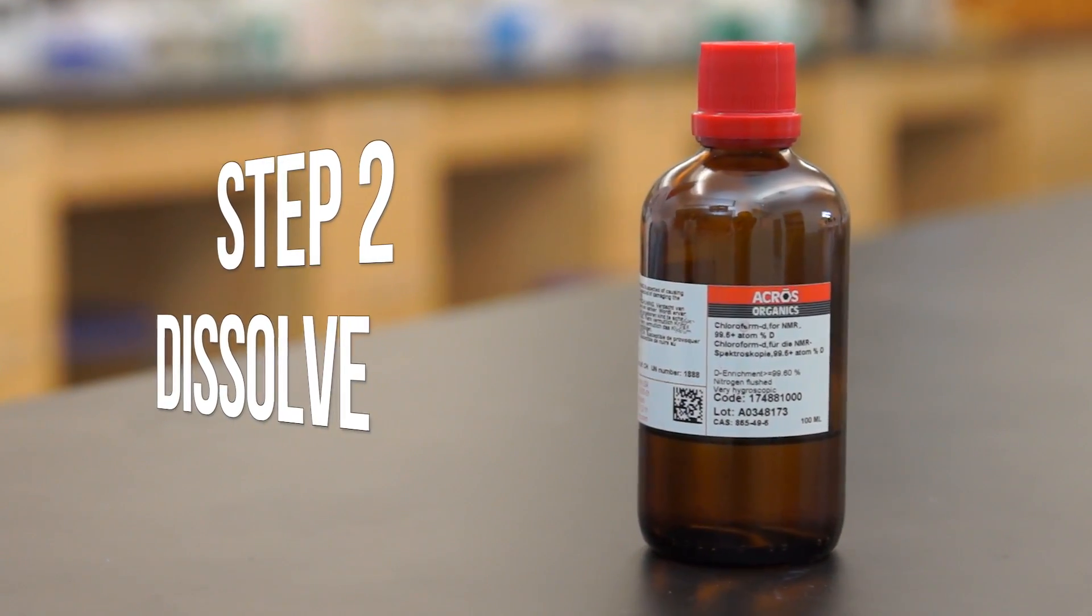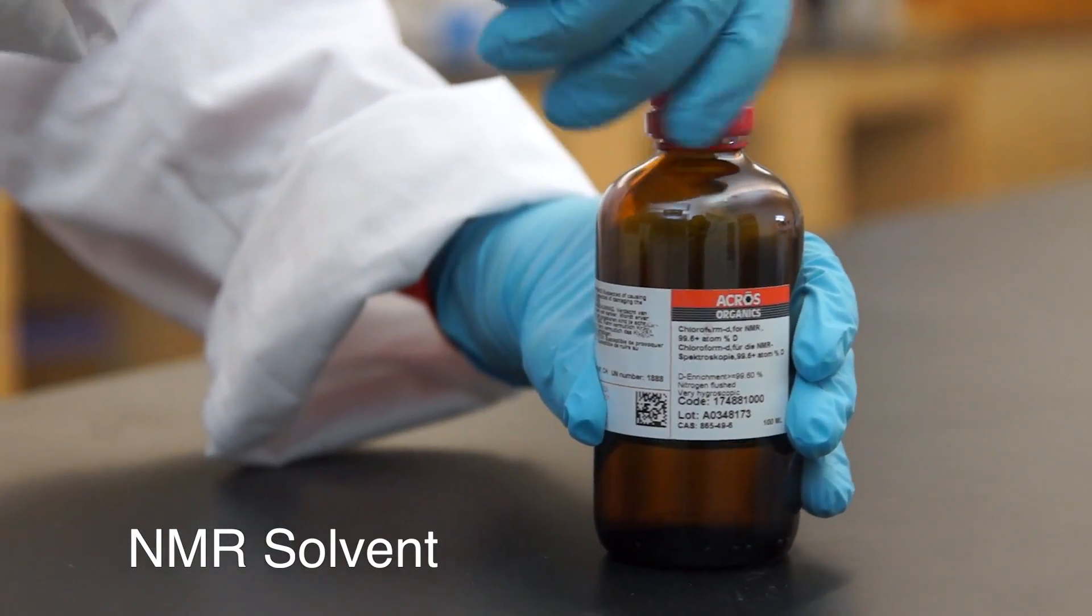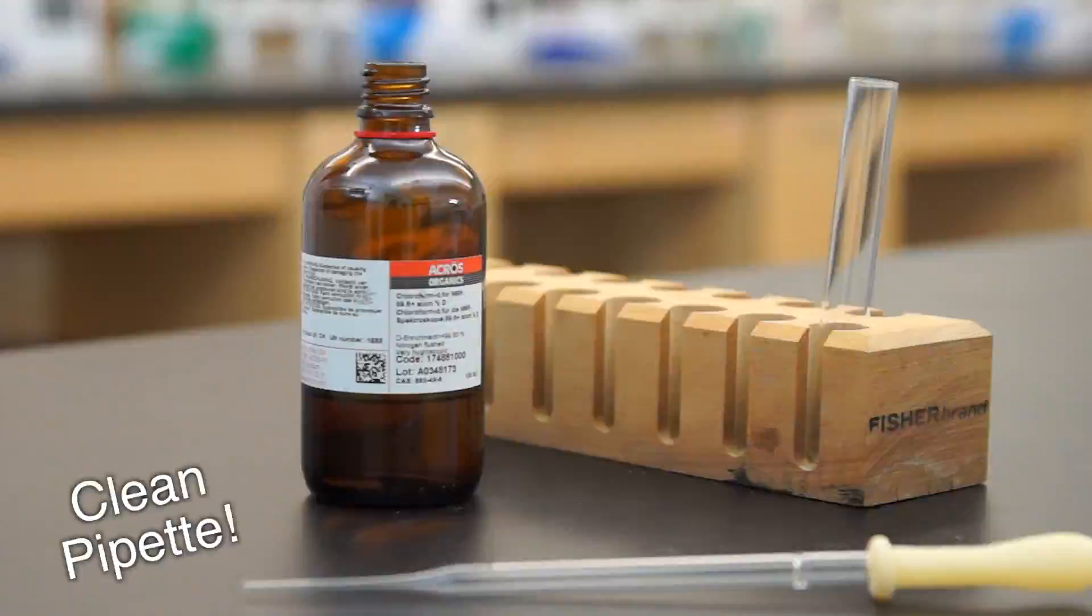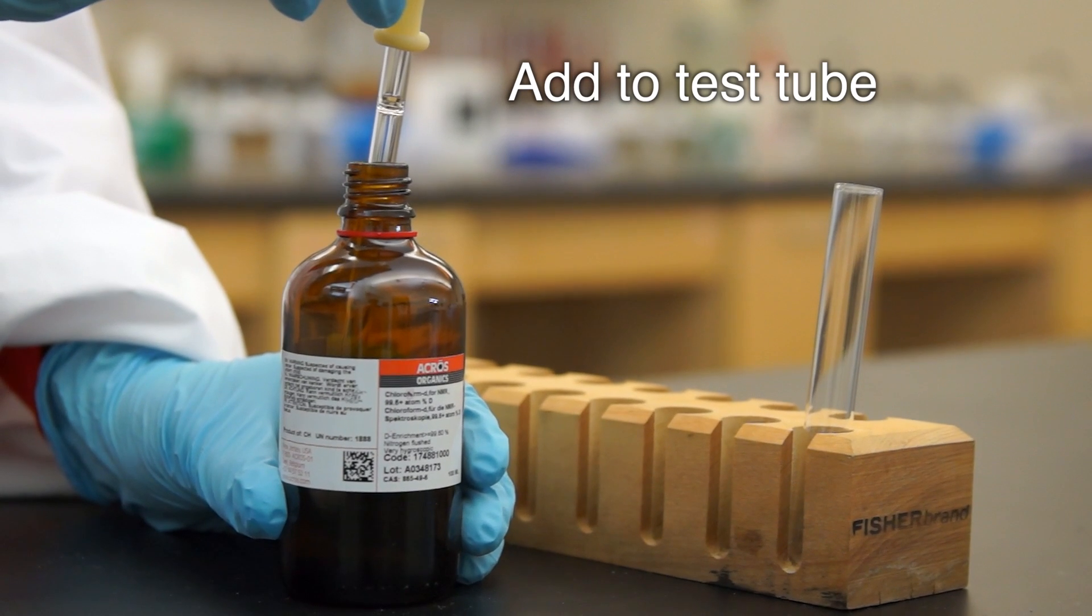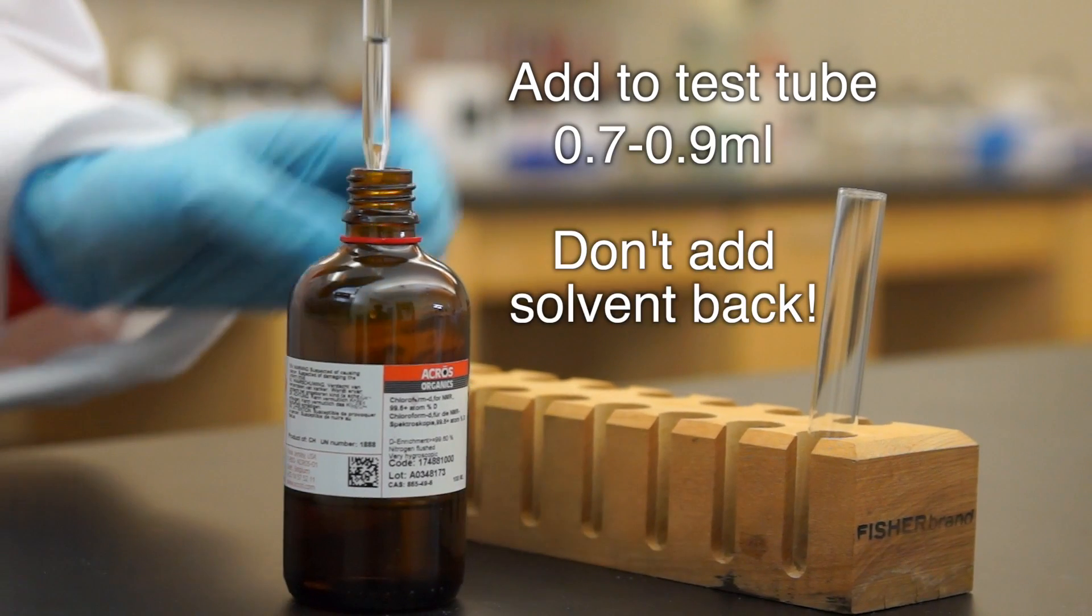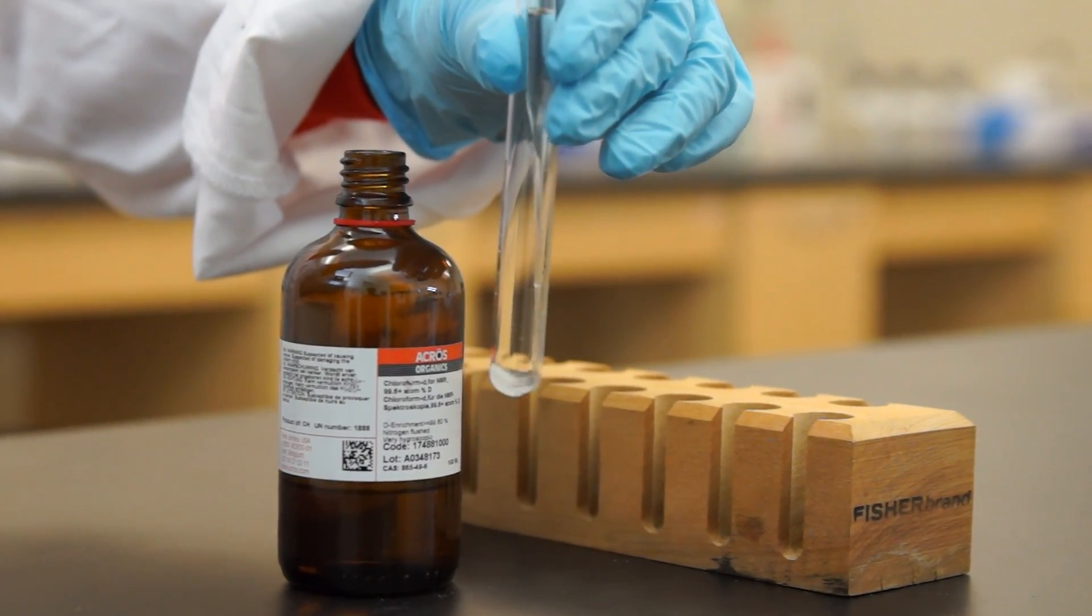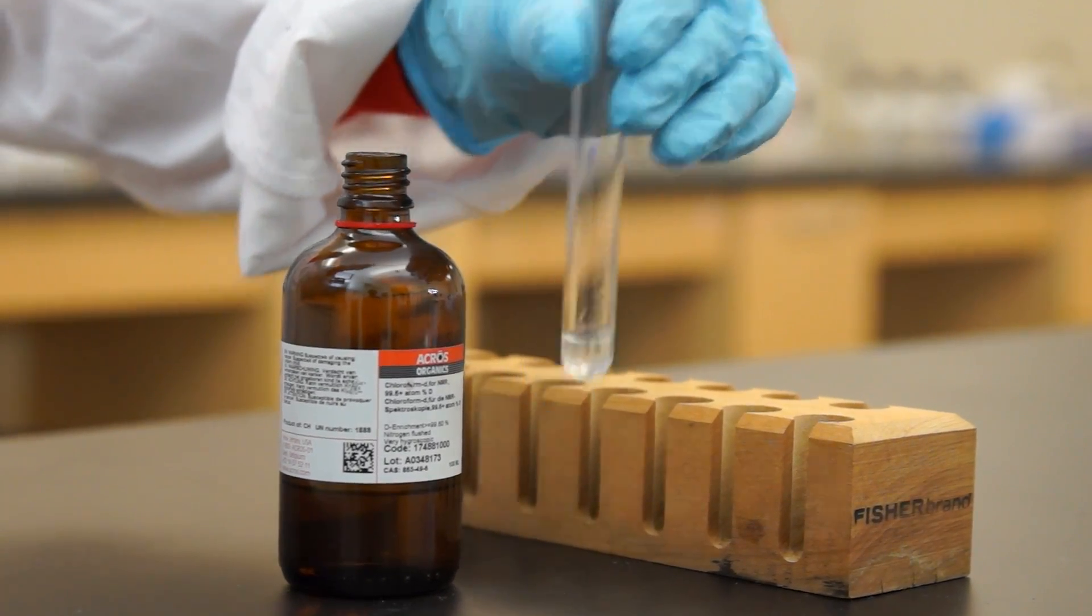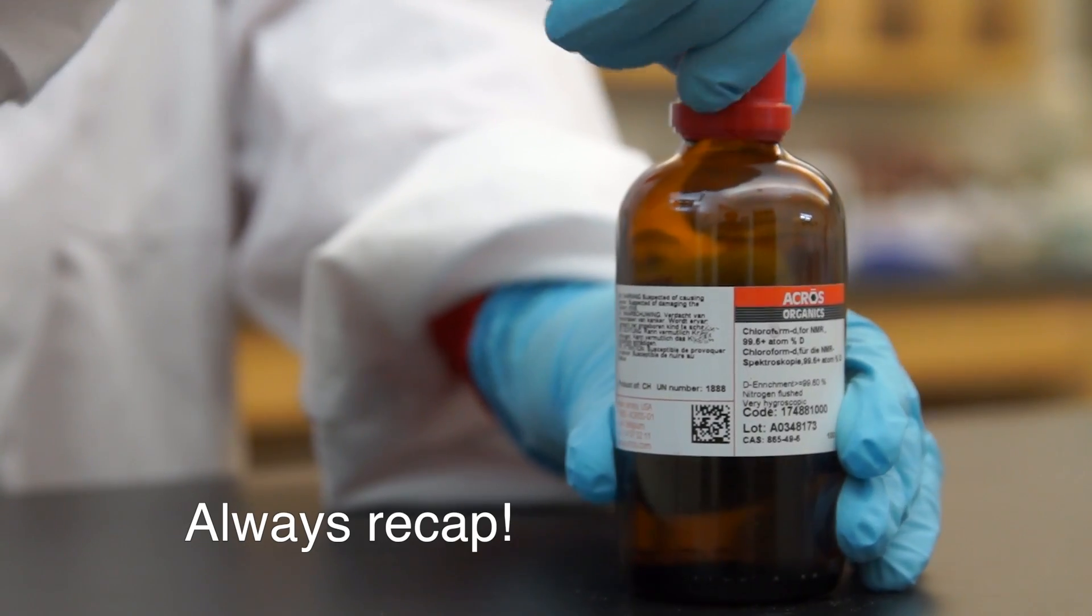Now, we're going to dissolve our sample. Uncap the NMR solvent and make sure you use a clean pipette to draw from it. Add about half a pipetteful, or about 0.7 to 0.9 ml of solvent to your sample. Remember, never add contaminated solvent back into the NMR solvent container. Always recap the NMR solvent container. Now, dissolve your sample by mixing it a little bit.